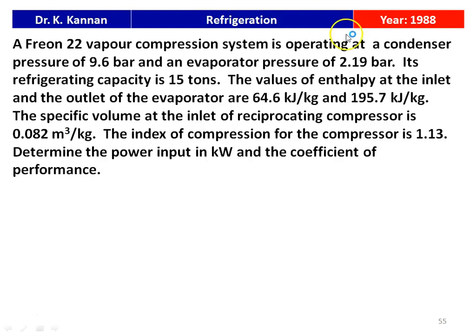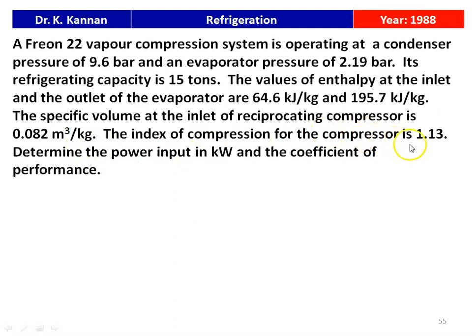The first question is from the 1988 question paper. A Freon 22 vapor compression system is operating at a condensing pressure of 9.6 bar and evaporator pressure of 2.19 bar. Its refrigeration capacity is 15 tons. The value of the enthalpy at the inlet and outlet of the evaporator are 64.6 kJ/kg and 195.7 kJ/kg. The specific volume at the inlet of the reciprocating compressor is 0.082 m³/kg. The index of compression is 1.13. Determine the power input in kilowatts and the coefficient of performance.